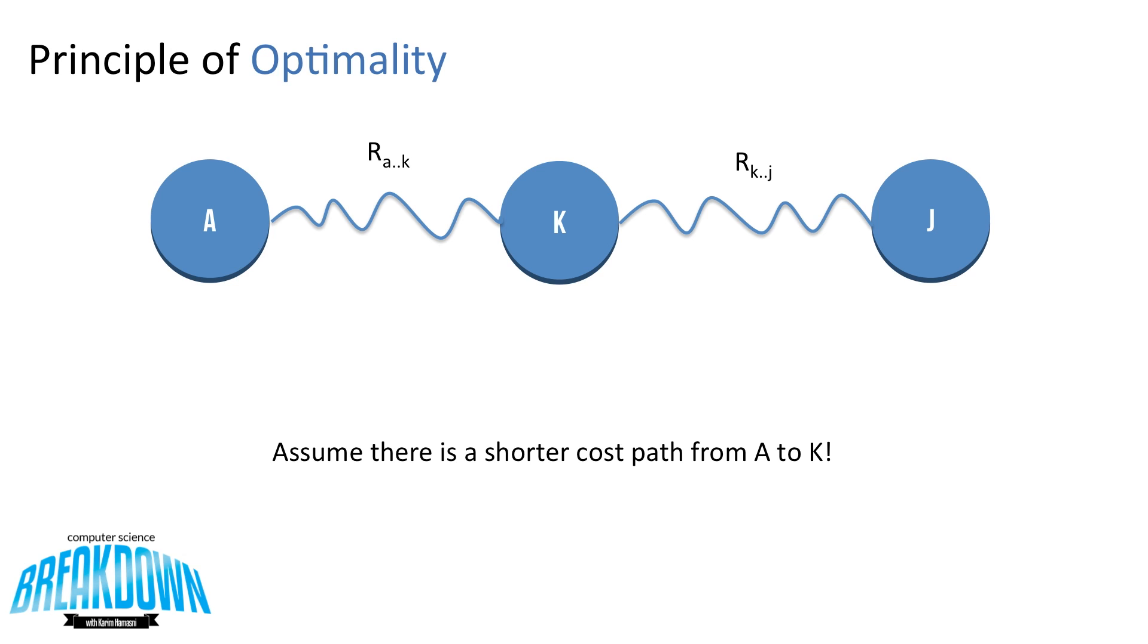So let's look at a diagram for this. From A to K and K to J, I've put a squiggly line in between because it could go through other cities and it's not necessarily a direct path. So our first step is to assume that there's a shorter path from A to K. Let's call it R' A to K, and I've drawn it into the diagram above.